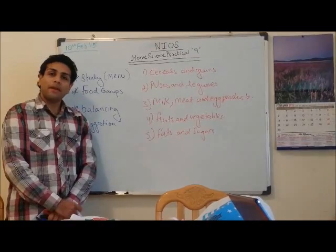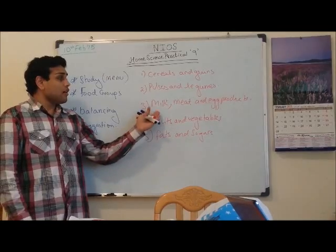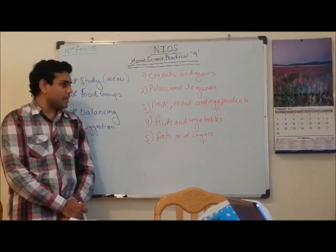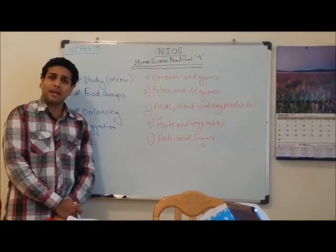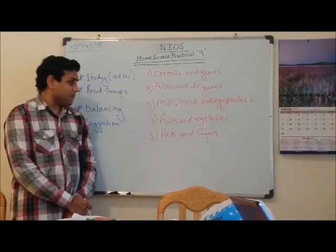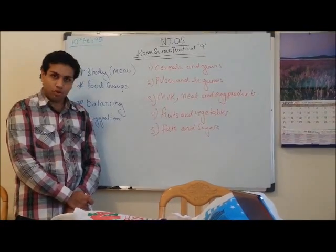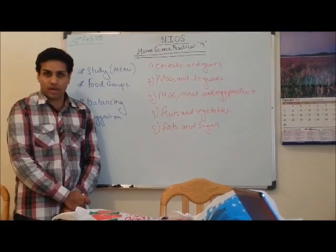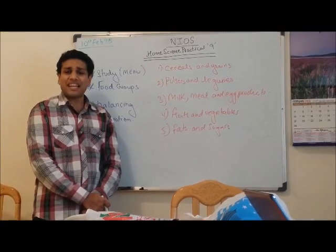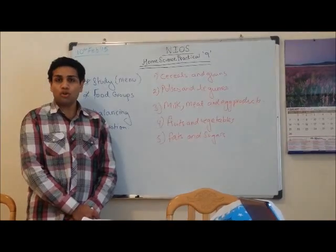Pulses and legumes, commonly known as lentils or dals that you use at home. Third: milk, meat and egg products — normal milk, meat products such as fish, meat or chicken, and egg products. Fourth: fruits and vegetables — any type of fruit and vegetables. Fifth: fats and sugars. Fats include butter and oil; sugars include sweets, candy, ice cream, chocolate. These are the five food groups.